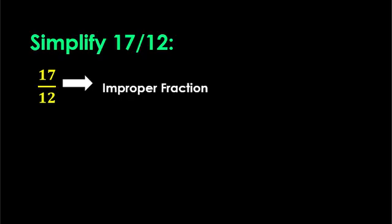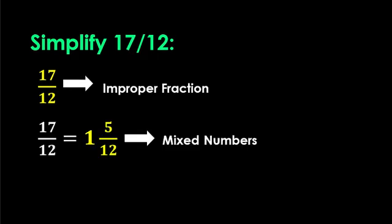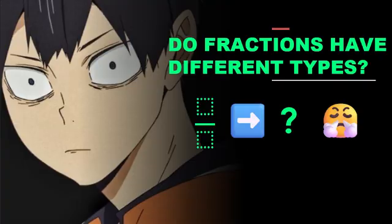Our answer, 17 over 12, is an example of improper fraction. And while it can be expressed as a mixed number, we will save that for another video where we will focus on identifying proper and improper fractions and learning how to simplify them.